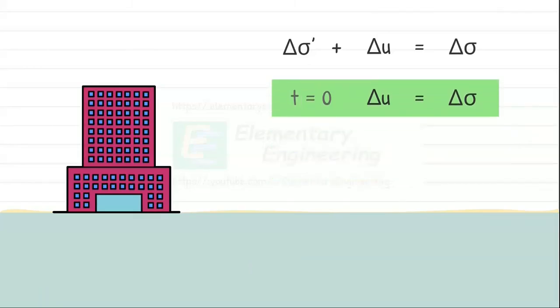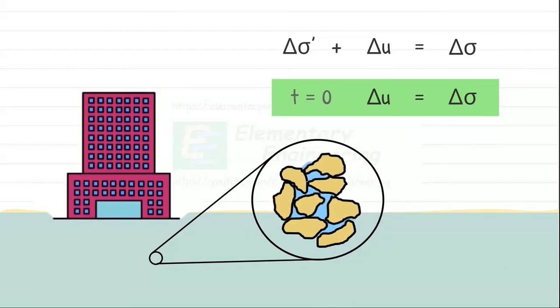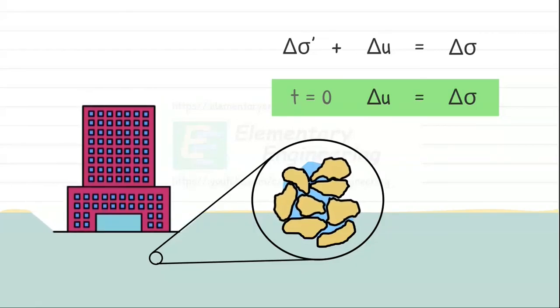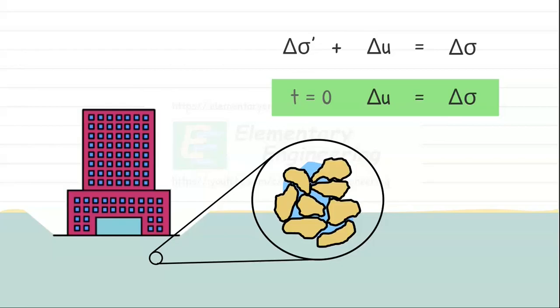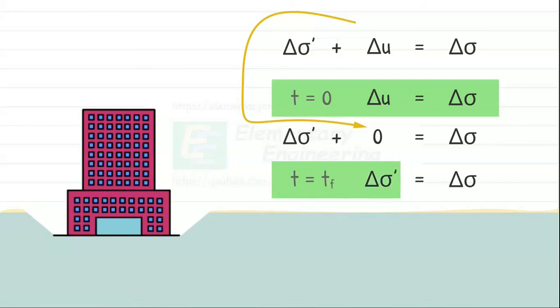This excess pore water pressure creates a hydraulic gradient and water gradually begins to flow out of the soil. As water slowly drains through the soil pores, the excess pore water pressure reduces and the applied pressure is transferred from the water to the solids, increasing the effective stress. Eventually, after a long time, all the excess pore water pressure dissipates. So the effective stress becomes the total stress applied on the soil.